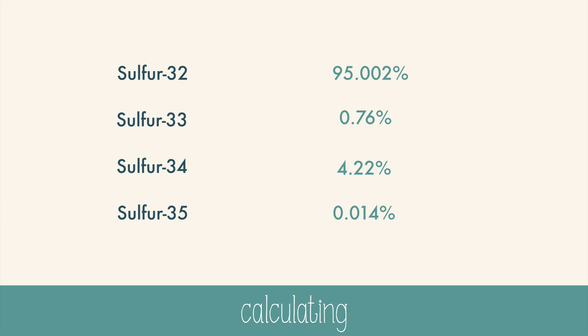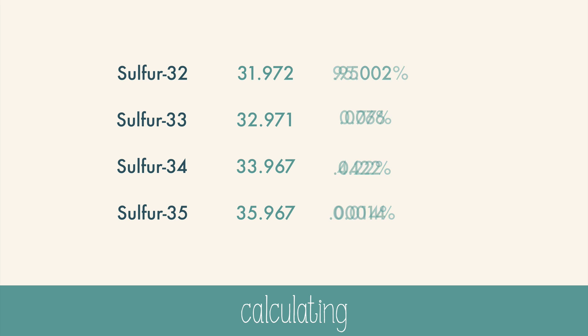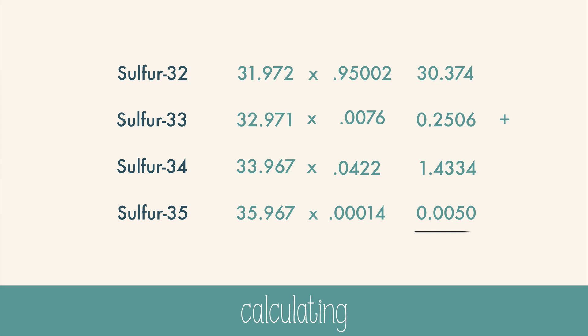Here's another example. Sulfur has four isotopes: sulfur-32, 33, 34, and 35. Find their masses in AMU and multiply by the percent abundance in decimal form. Then add the products, and you get 32.06 AMU.